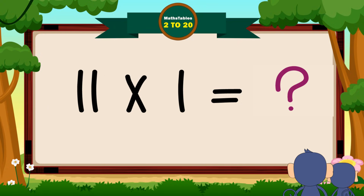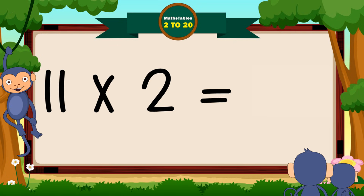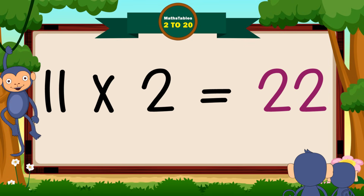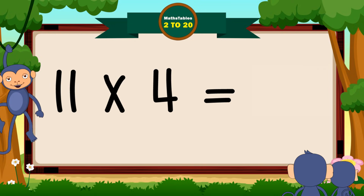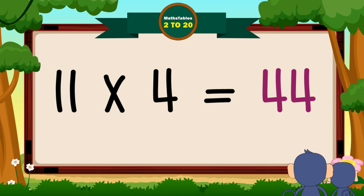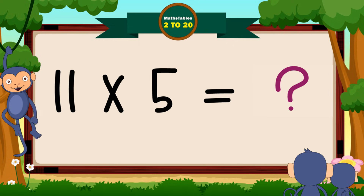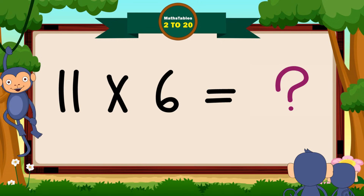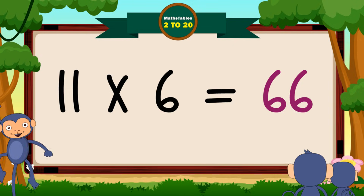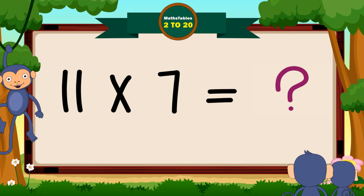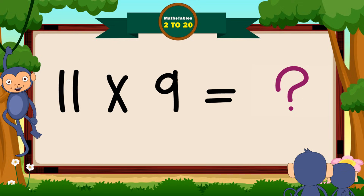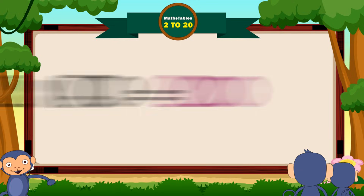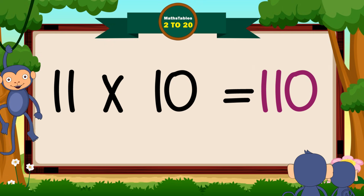11 one's is 11. 11 two's is 22. 11 three's is 33. 11 four's is 44. 11 five's is 55. 11 six's is 66. 11 seven's is 77. 11 eight's is 88. 11 nine's is 99. 11 ten's is 110.